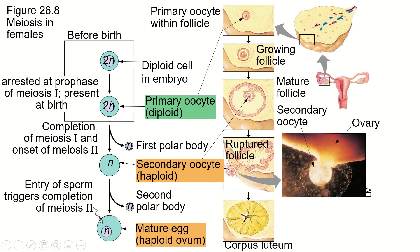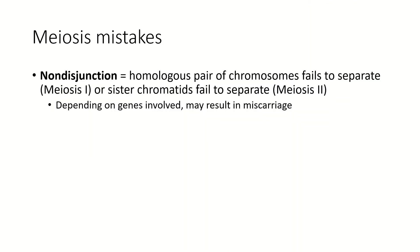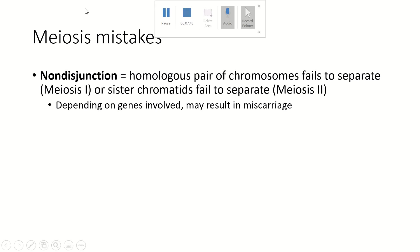So that is how it all happens in the human male and female. I've got one more quick section where we're going to talk about what happens if meiosis doesn't proceed normally.